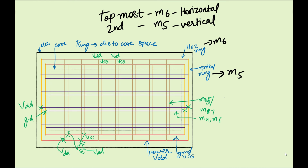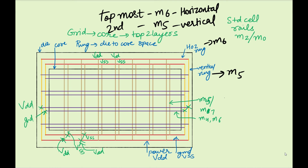Similar to the ring, we have something called a grid, which runs in the core across the top two layers. Beyond the grid, there is something called standard cell rails. The lowest metal layer generally has the standard cell rails — it could be M0, M2, or any layer chosen by the technology or power team. Power hookup happens at the standard cell rails, and from there a via ladder is connected to the topmost two layers.